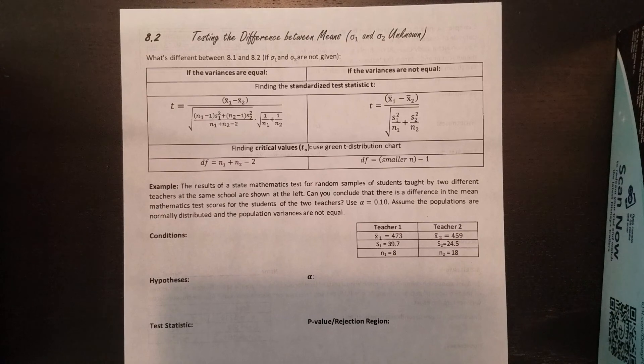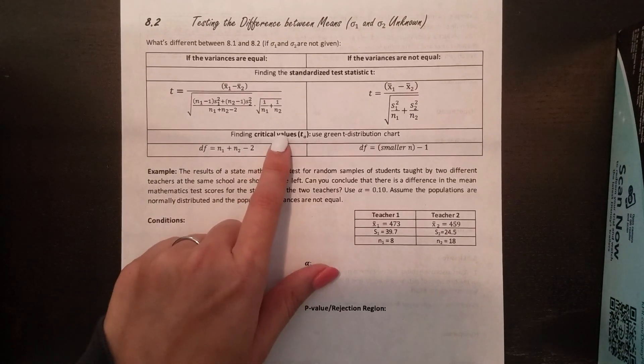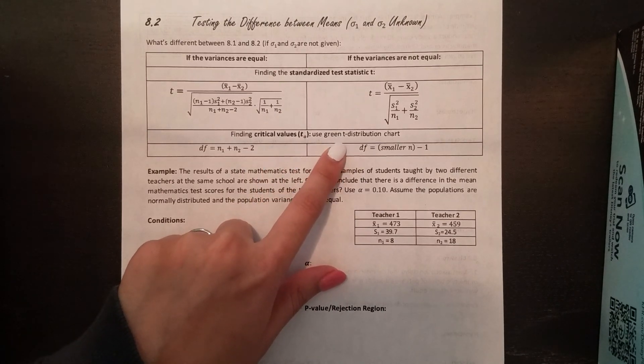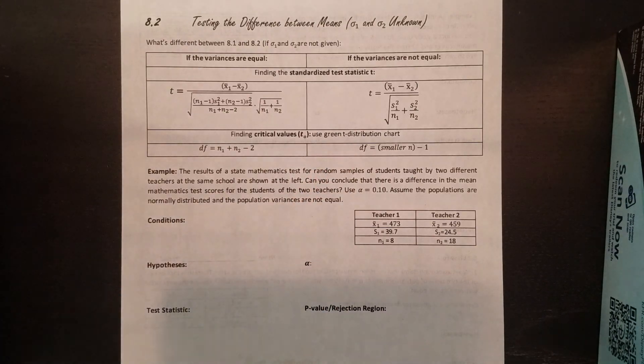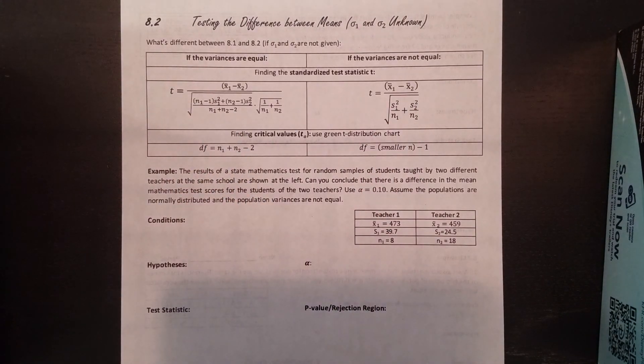The other difference for this section is that when we find our critical values to figure out our rejection region, we're looking for t₀ again. So that means we need to use our green distribution chart. Mine is yellow because that's all I had. But that's the one you're using. Remember, at the top, it should say T distribution. So I don't have any additional notes. I've printed all of those for you. So all we're doing is examples because it's very similar to last time.